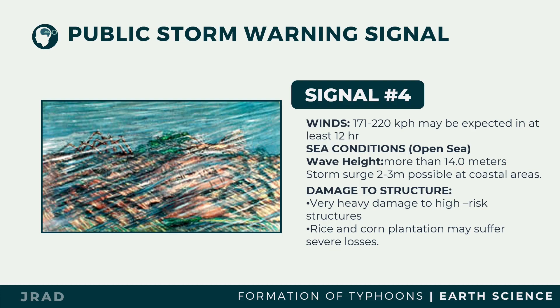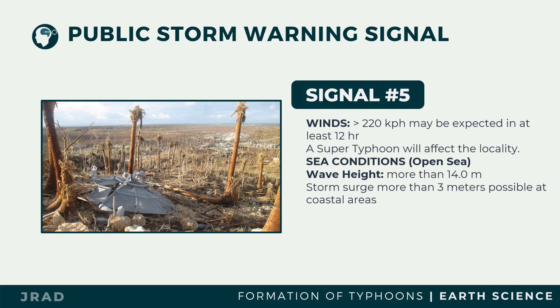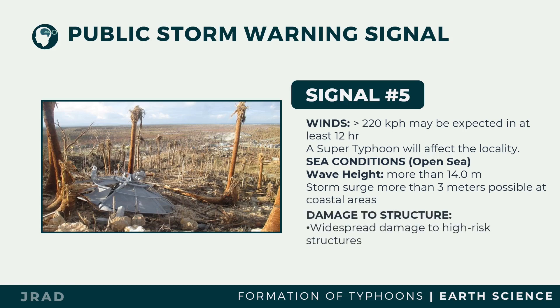Tropical Cyclone Wind Signal Number Five: winds greater than 220 kilometers per hour may be expected in at least 20 hours — a super typhoon will affect the locality. There is widespread damage to higher structures, complete roof failure on many residences and industrial buildings, and severe and extensive window and door damage. Most residential and institutional buildings of mixed construction may be severely damaged. Most tall trees are broken, uprooted, and defoliated. Coconut trees are stooped, broken, and uprooted. Few plants and trees survive.